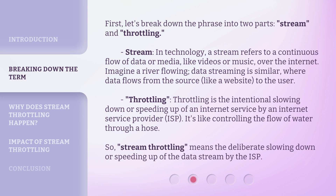Throttling. Throttling is the intentional slowing down or speeding up of an internet service by an internet service provider, or ISP. It's like controlling the flow of water through a hose. So, stream throttling means the deliberate slowing down or speeding up of the data stream by the ISP.